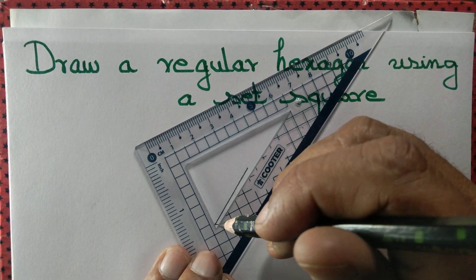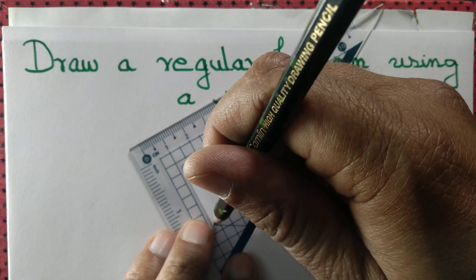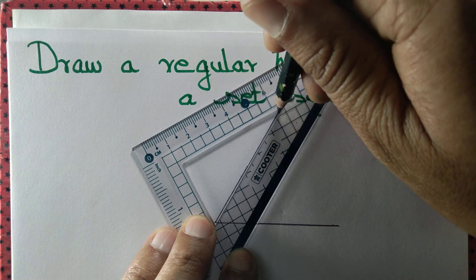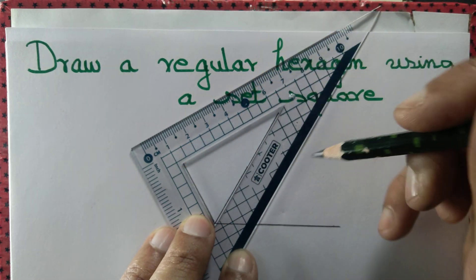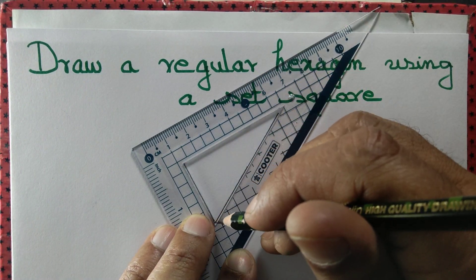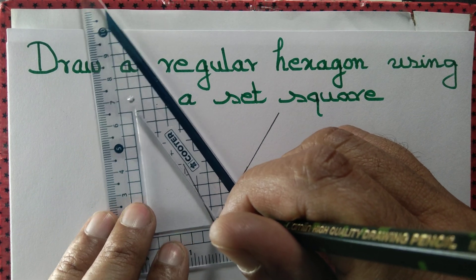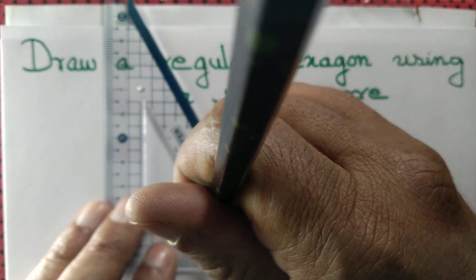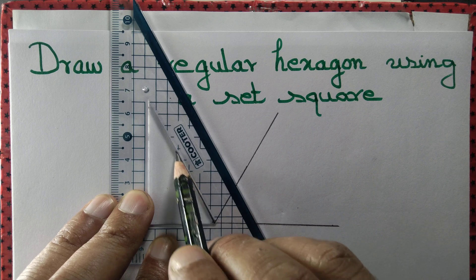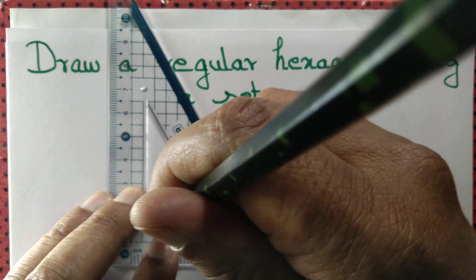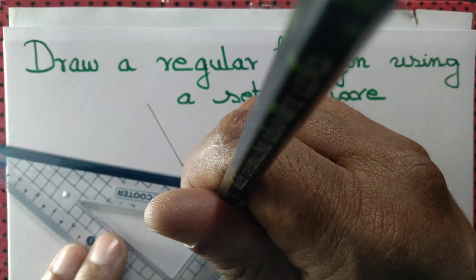Next, we draw another angle that measures 60 degrees. We continue this process.